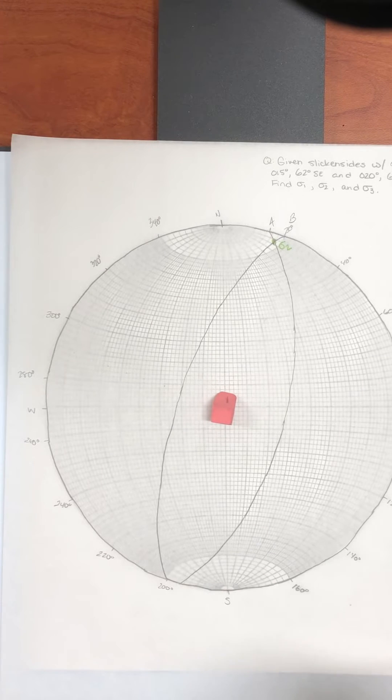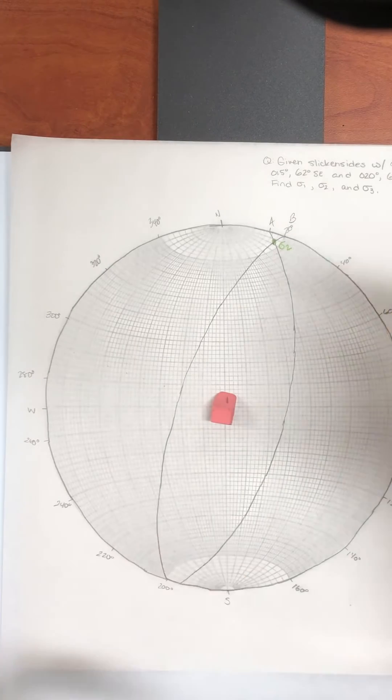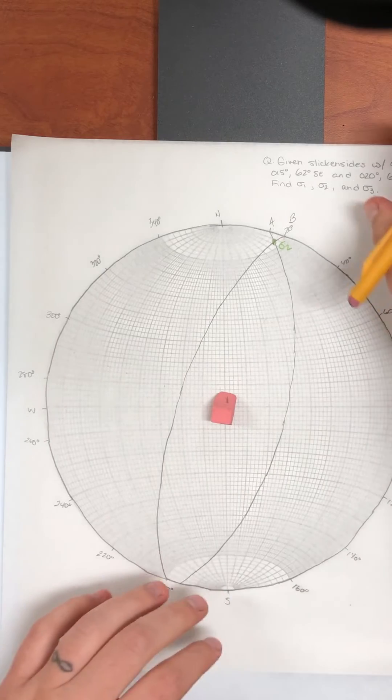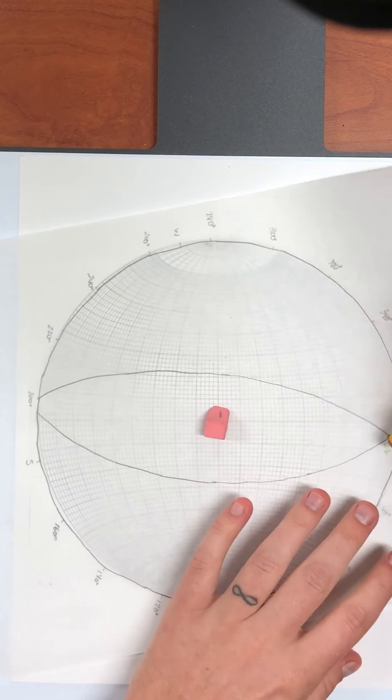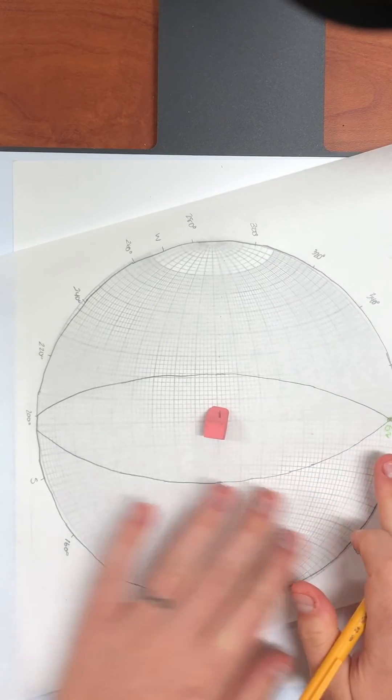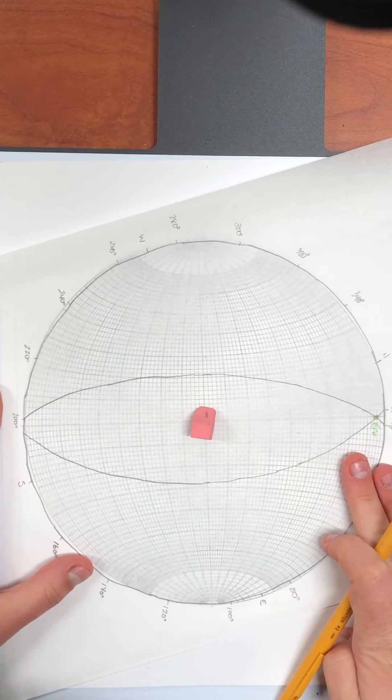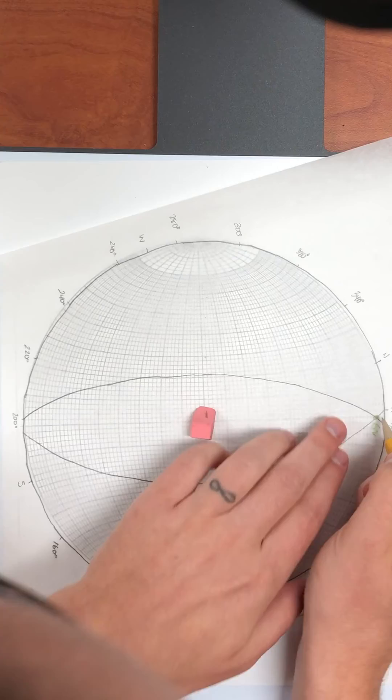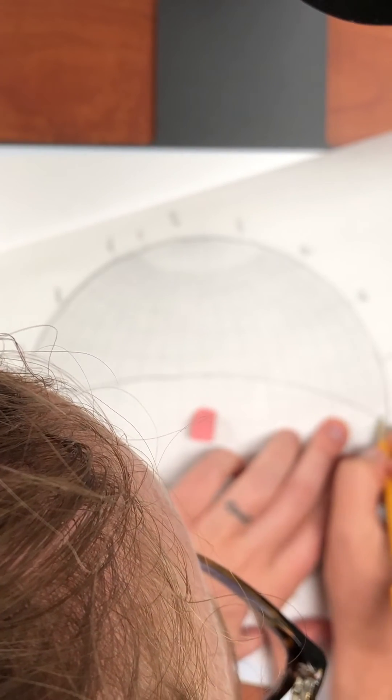So now to get sigma one and sigma three, we have to remember that sigma one and sigma three live in a plane perpendicular to sigma two. So we're going to have to deal with things 90 degrees from sigma two. So what we're going to do is rotate sigma two down to the horizontal. Good. And we're going to count 90 degrees over from sigma two. So right now, sigma two looks like it's about four degrees in from the primitive circle.